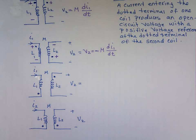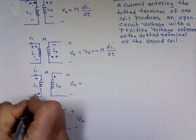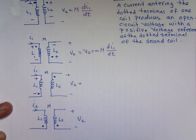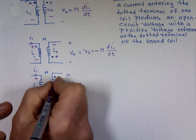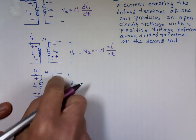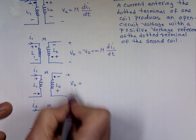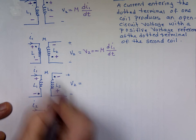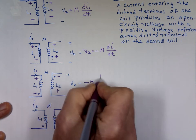Let's look at the third example. The current enters the inductor, marking it plus to minus. Notice the dot is on the negative end here, which means the effect on the second coil is minus-plus — the dots have to match. V2 is labeled plus on the dotted end, but that end is actually minus, so V2 equals negative M di1/dt.